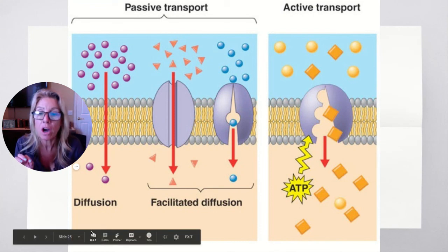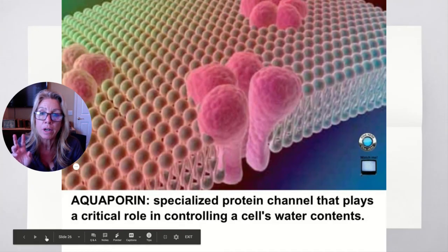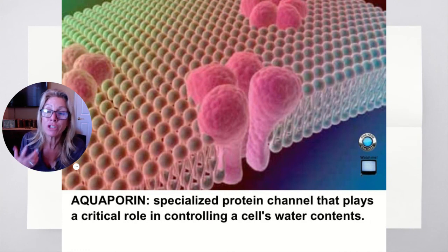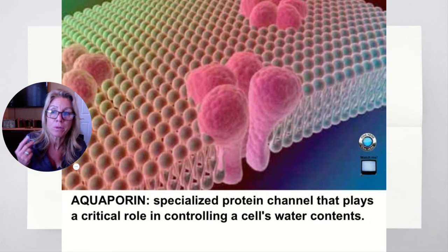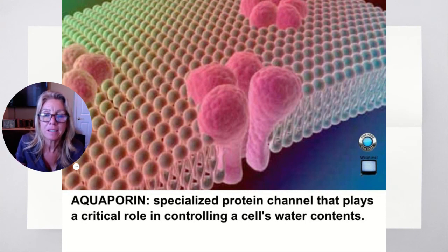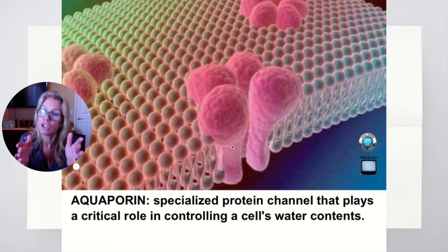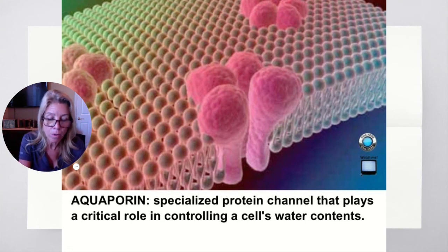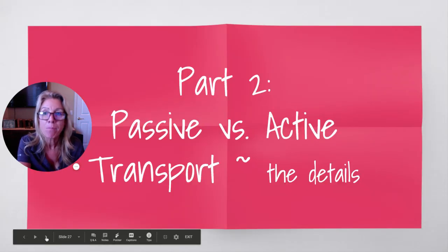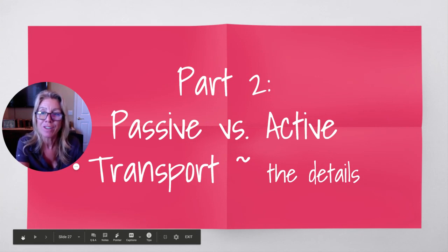Aquaporins — remember how I told you water is a polar molecule? It can go through, but when you measure how fast it gets through the phospholipid bilayer, it gets an assist from a protein channel dedicated just for water: an aquaporin. Aquaporins are channel proteins for water molecules. Part two will cover more details on passive and active transport.